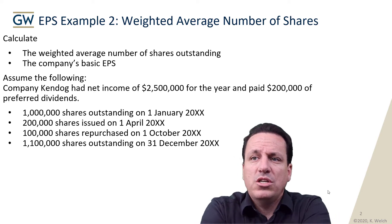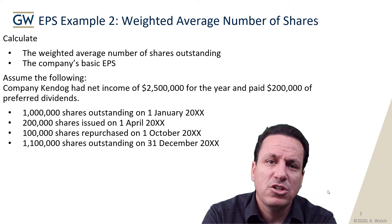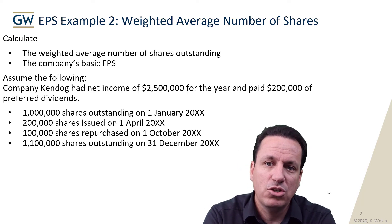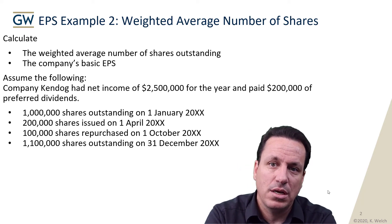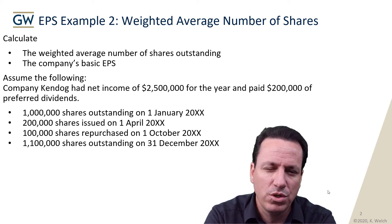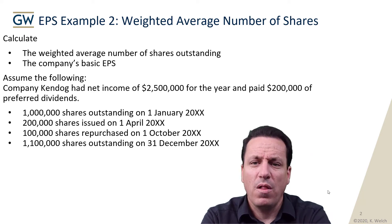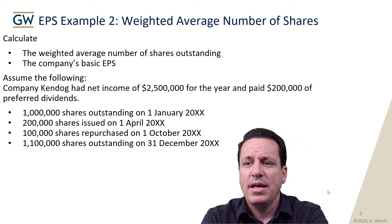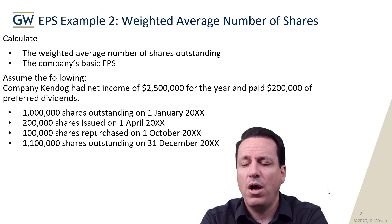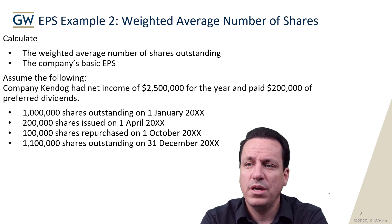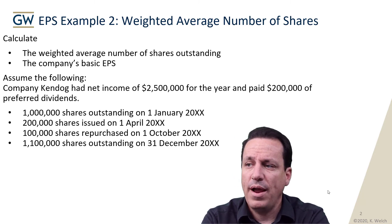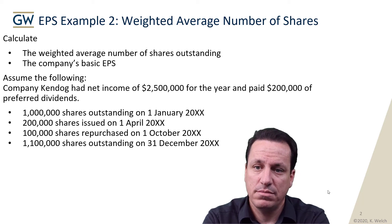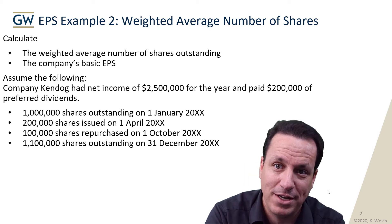This example goes into the calculation for weighted average shares outstanding. When we go through this initially, your mind's going to say, oh, this looks like it's too much. Really kind of intuitive. So assume the following: a company, Ken Dogg, had net income of $2,500,000 for the year and paid $200,000 of preferred dividends. There's those preferred dividends.